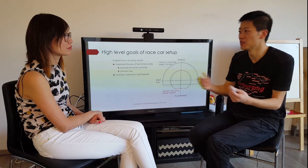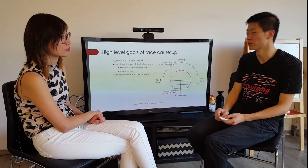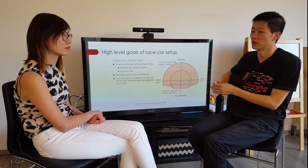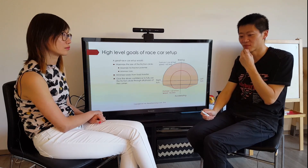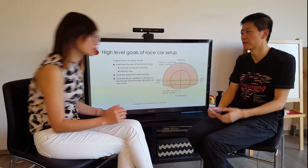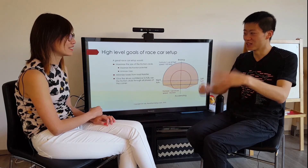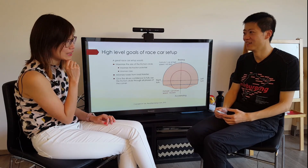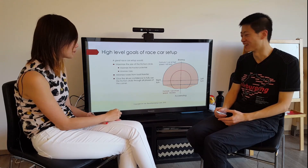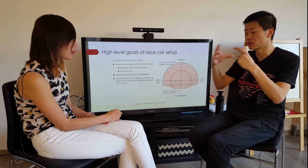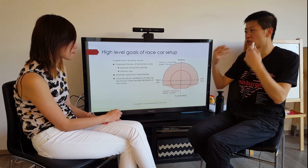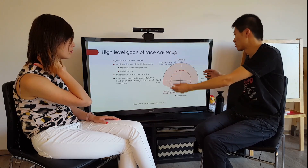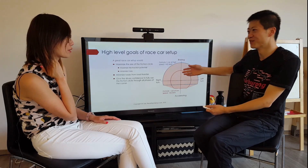To maximize the size of the friction circle, you want to maximize the grip from the tires, minimize the mass of the car — make the car as light as possible — and minimize the loss from load transfer. Load transfer is a bit of an abstract concept at this point, but it's like when you brake and weight shifts forward. When that happens, the total grip from all four tires added together reduces. We will get to why that is later. You also want to give the driver the confidence to fully use what is available — it's no good having a very large friction circle if you don't know how to use it.